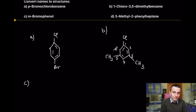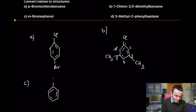Compound C: meta-bromophenol. Remember that phenol is the compound that contains a hydroxy group, and the meta position is at position 3 — three carbons away from position 1.